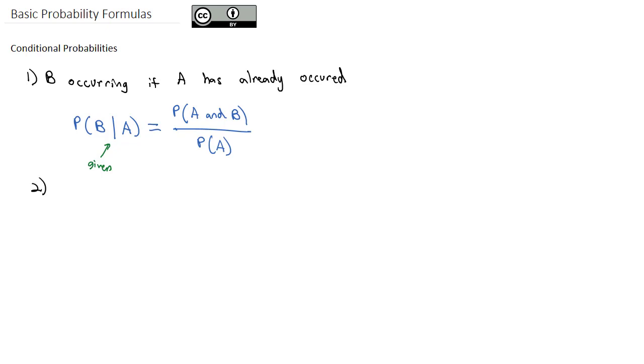So for example, if we toss a die, what is the probability that we roll a two given we rolled an even? So to help us visualize we're tossing a die, there's one, two, three, four, five, six options for a standard six-sided die.